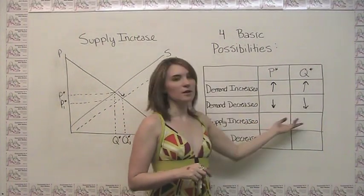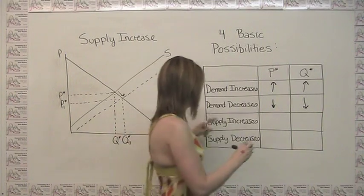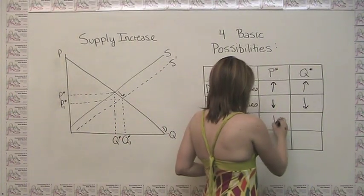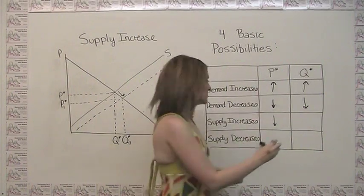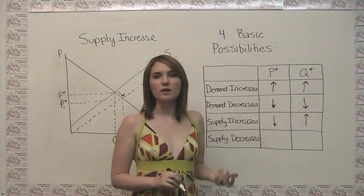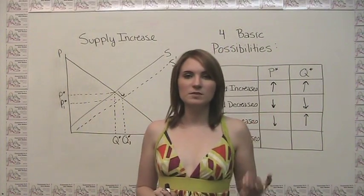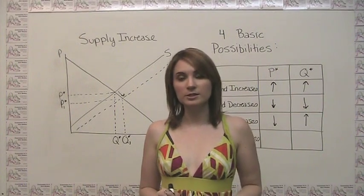So we can keep filling in our table here and say when we have an increase in supply, we're going to have a decrease in equilibrium price and an increase in equilibrium quantity. And that is, in fact, what you've seen over the last few years in terms of the price and quantity in the market for LCD televisions.